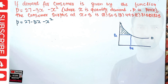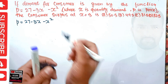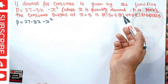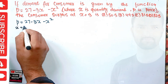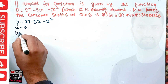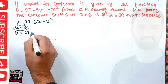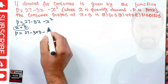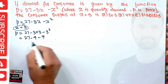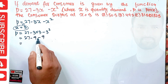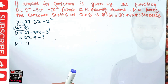So how do we find this area? We use our inverse demand function. To find the equilibrium price, we plug x = 3 into the equation: p = 27 minus 3(3) minus 3 squared = 27 minus 9 minus 9 = 27 minus 18 = 9. So the equilibrium price is 9.